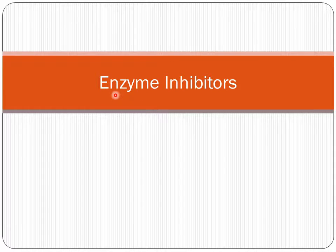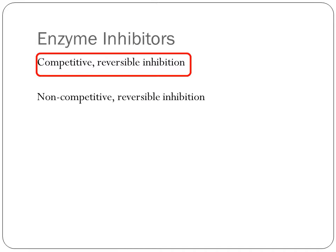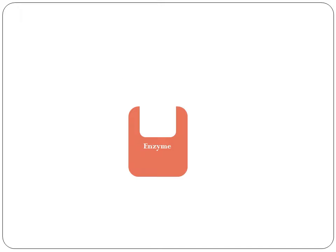In this lecture we will briefly talk about enzyme inhibitors. We have two types of enzyme inhibitors: competitive and non-competitive inhibitors, and both of them are reversible inhibitors. Let's start with the mechanism of competitive reversible inhibition.